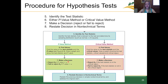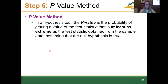I wanted to first remind you of this broader picture of the steps before we continue on with step six. Next we're going to find the p-value. In finding a p-value, the p-value is the probability of getting a value of the test statistic that is at least as extreme as the test statistic obtained from the sample data, assuming that the null hypothesis is true.